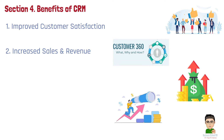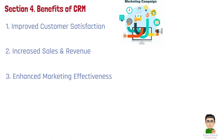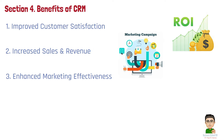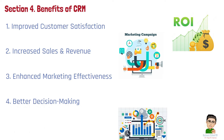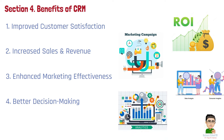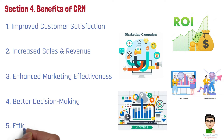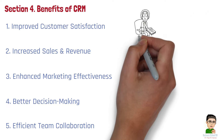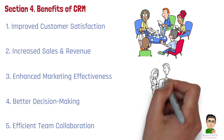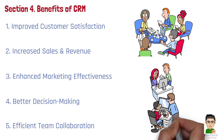Number 3: Enhanced Marketing Effectiveness. With CRM, businesses can create highly targeted marketing campaigns based on customer data and preferences. This leads to more effective outreach and a higher return on marketing investment. Number 4: Better Decision Making. The analytics and reporting tools within CRM systems offer real-time insights into customer trends, sales performance, and market opportunities, helping managers make more informed, strategic decisions. Number 5: Efficient Team Collaboration. CRM systems facilitate collaboration by ensuring all teams — sales, marketing, and customer service — are working with the same up-to-date customer data. This leads to improved coordination, more effective workflows, and a better overall customer experience.